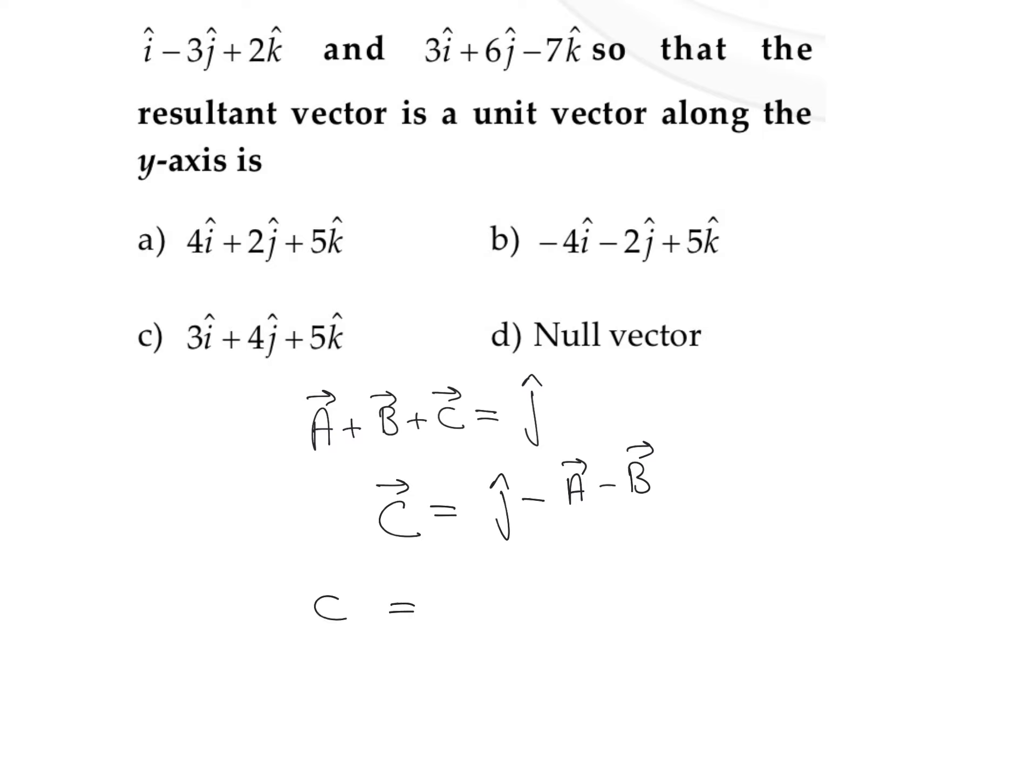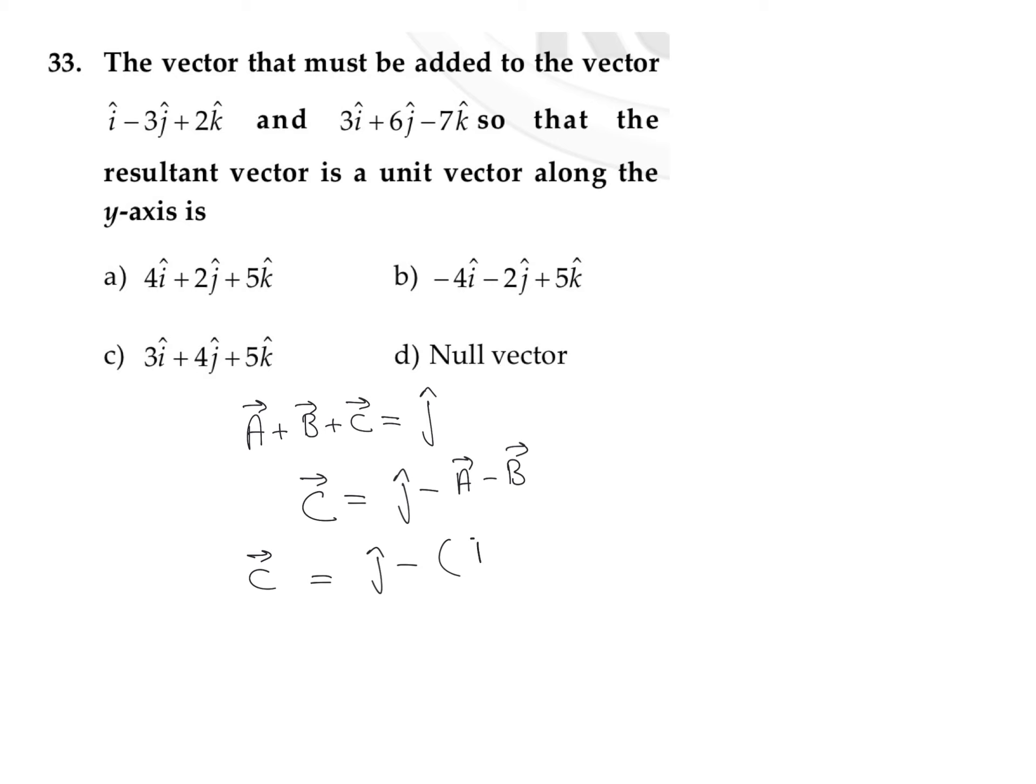So we can find out the value of the C vector over here. That is j vector minus, what is A vector? A vector is nothing but i cap minus j cap plus 2k cap. And what is B vector? B vector is nothing but 3i cap plus 6j cap minus 7k cap.